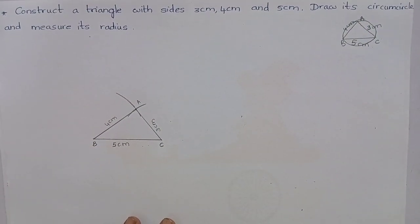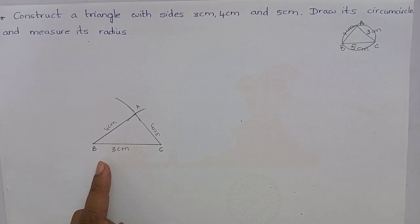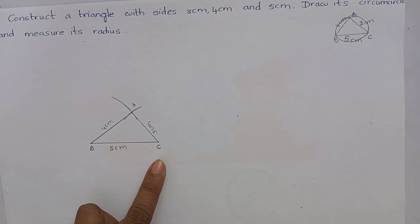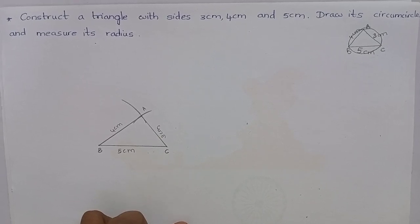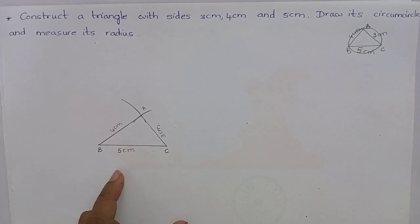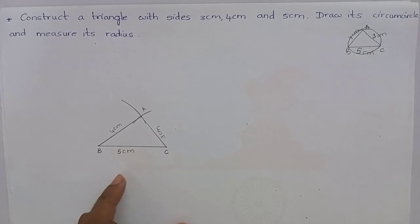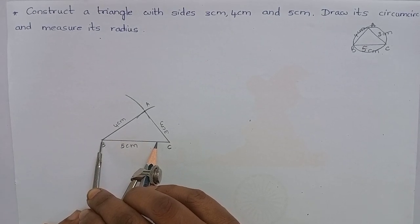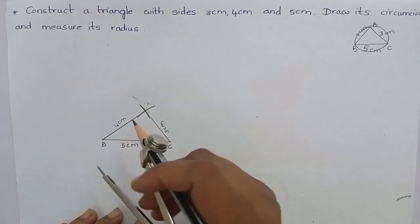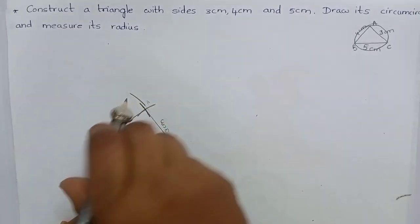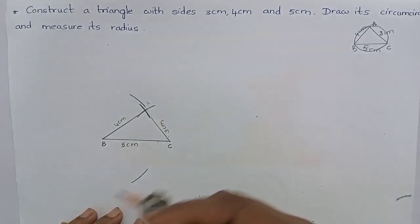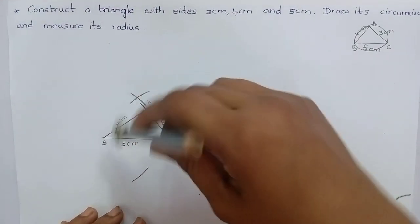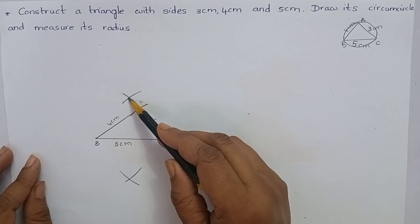We know that to draw a circumcircle to the triangle, we have to take the perpendicular bisector of any two sides. First, let me take a perpendicular bisector of the side BC. To construct a perpendicular bisector for BC, we have to take more than half of BC. You can see that this is more than half of BC. Mark an arc from the point B. Mark an arc from the point C. Now, join these two points.